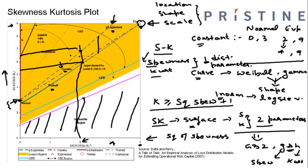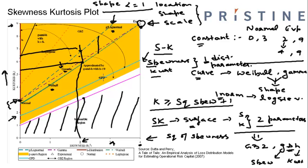GPD distribution can be a thick-tailed or thin-tailed distribution depending on the distribution parameter. If the shape parameter of GPD is less than or equal to 1, then GPD will be a thin-tailed distribution. As the shape parameter increases, GPD becomes more and more thick-tailed. In this chart, the region of GPD shown is where GPD is a thinner-tailed distribution compared to Gamma or Weibull, but in practice where GPD is fitted to operational risk data sets, it would be those cases where we are using the thick-tailed behavior of GPD.